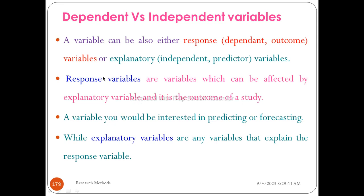For example, the outcome of the study: lung cancer is the dependent variable, and smoking is the explanatory or independent variable. So smoking is the explanatory variable, and lung cancer is the response variable — the outcome and effect.